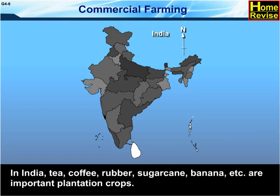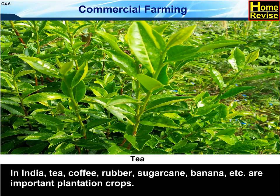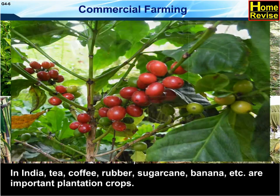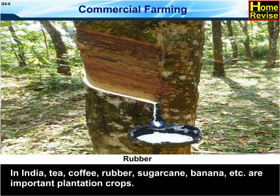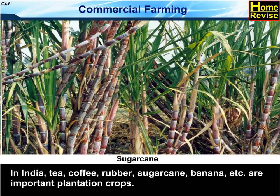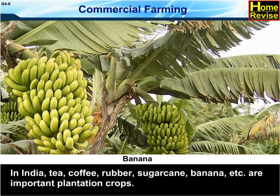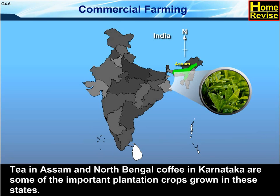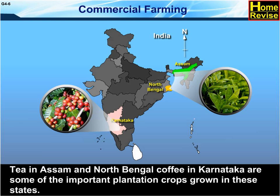In India, tea, coffee, rubber, sugarcane, banana, etc. are important plantation crops. Tea in Assam and North Bengal, coffee in Karnataka are some of the important plantation crops grown in these states.